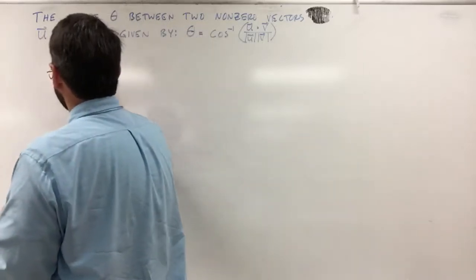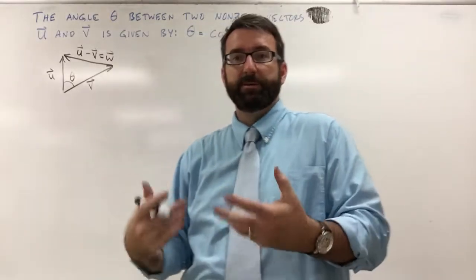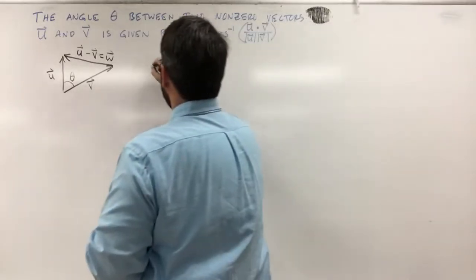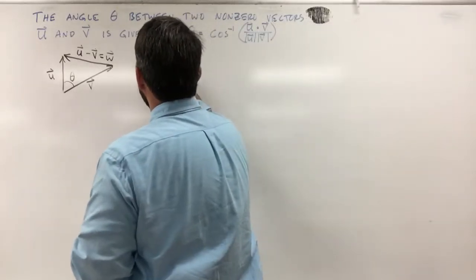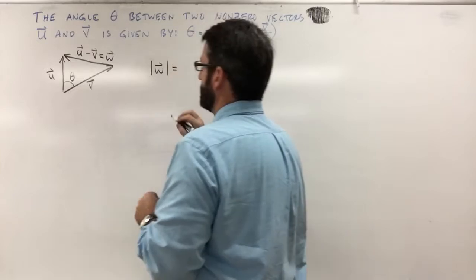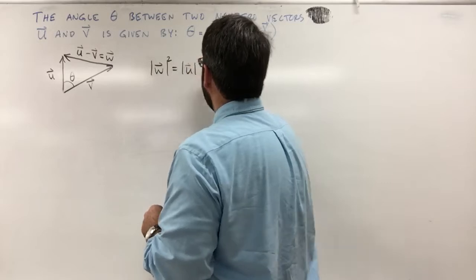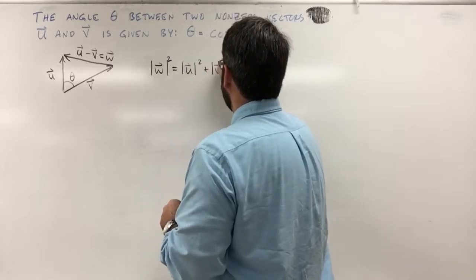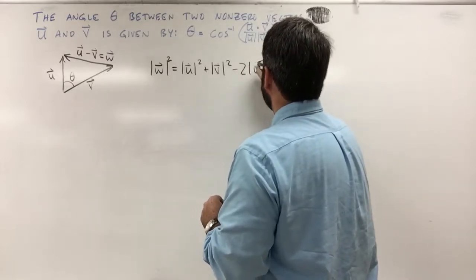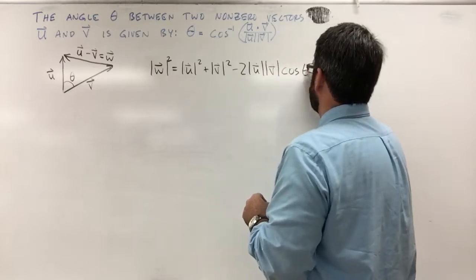Hopefully that was enough to convince you that this vector completing this triangle is u minus v. We said that the angle between u and v is theta. Now we've got a triangle — let's use the law of cosines. The law of cosines says that the magnitude of w squared is equal to the magnitude of u squared plus the magnitude of v squared minus 2 times the magnitude of u times the magnitude of v times the cosine of theta.